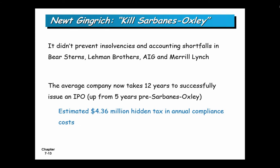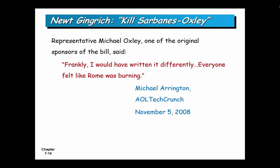Newt Gingrich — a congressman from the Reagan years, a conservative Republican. Generally, Republicans want less legislation; Democrats want more oversight. His belief is Sarbanes-Oxley goes too far — too much oversight. His points of view are: one, it didn't solve the problems — we had 2008-2009, so it wasn't a pure solution. Two, it costs money because it takes 12 years to go public now compared to five years prior to Sarbanes-Oxley, implying a $4 million — probably $10 million now — implied tax to go public. Oxley, the second half of Sarbanes-Oxley, said he would have written it differently. Everyone felt like Rome was burning.